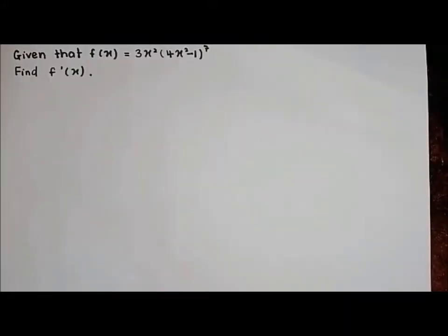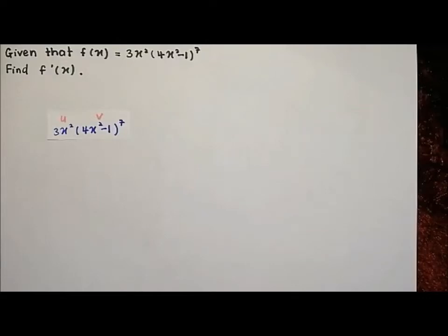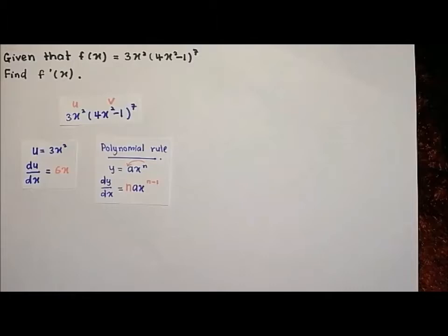Next question: given that f(x) equals 3x squared times (4x squared minus 1) to the power of 7, find f prime x. Finding f prime x means we have to differentiate the equation. To differentiate it, we need to use the product rule. To apply the product rule formula, we label the equation into u and v respectively. First, differentiate u, du over dx, using the polynomial rule.